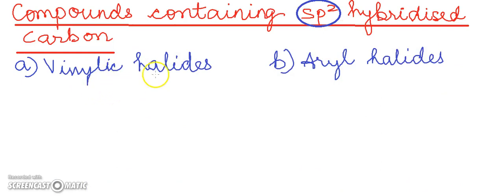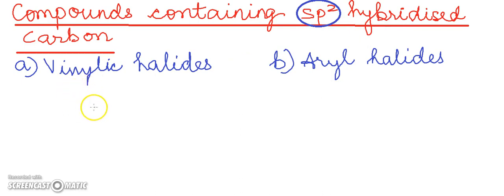Next we will look at the compounds containing the sp2 hybridized carbon, where the halogen atom is attached to an sp2 hybridized carbon. In the vinyl halides, the halogen atom is bonded to the sp2 hybridized carbon of one of the carbon atoms of a double bond.